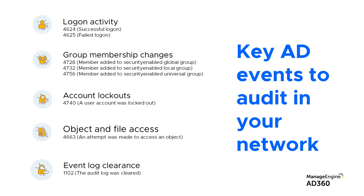If you're able to track changes to critical groups and quickly identify which users have those privileges, you can do a lot. You'd also want your solution to perform user behavior analytics — check where the logon initiated from, the IP reputation of the source, and put together actionable insight. Monitoring group membership changes without being hindered by false positives is a critical aspect of your cyber security event monitoring strategy.